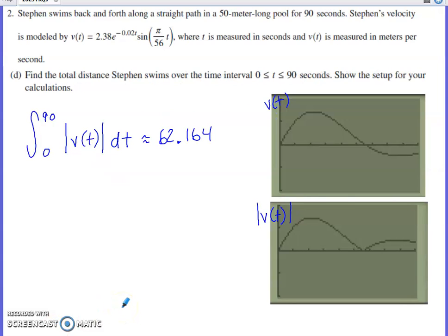Last part of this question, find the total distance Stephen swims over the time interval 0 to 90. Show the setup for your calculations. So this is the velocity graph from back in part A. Velocity is positive on this stretch, so Stephen is moving forward. Stephen changes directions, and he's moving backward on this stretch. So the area that's here gives Stephen's distance covered in the positive direction on 0 to 56.